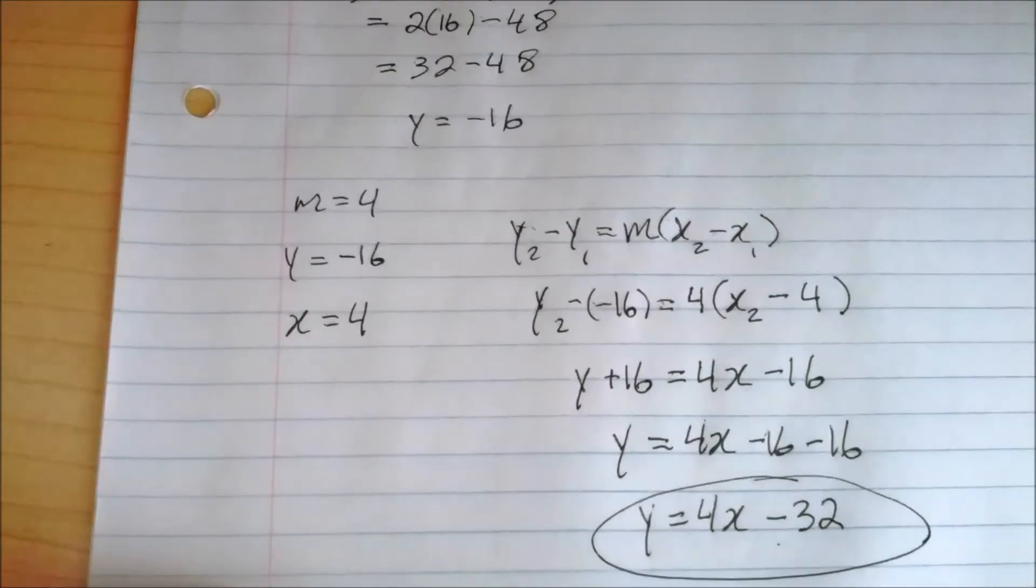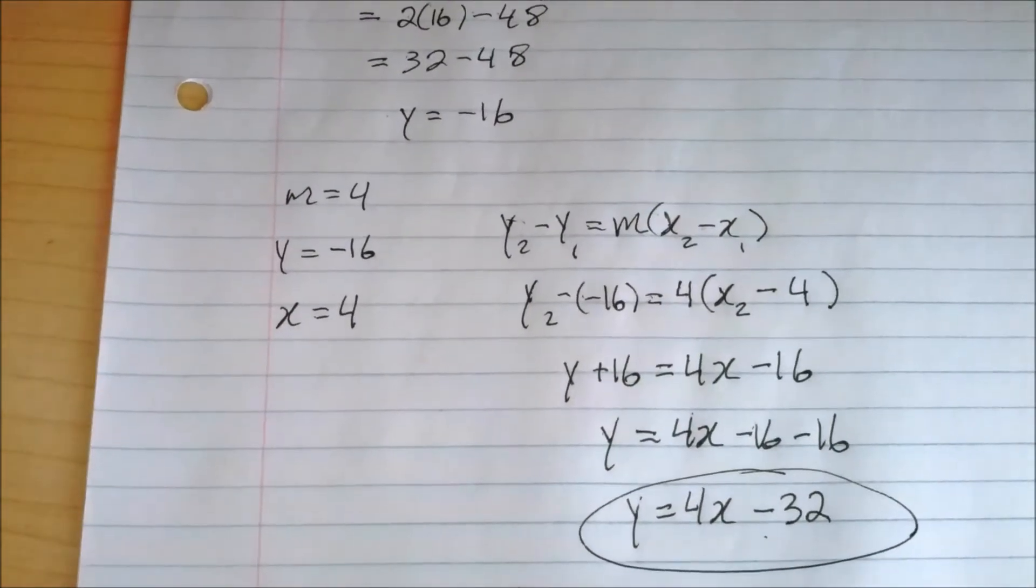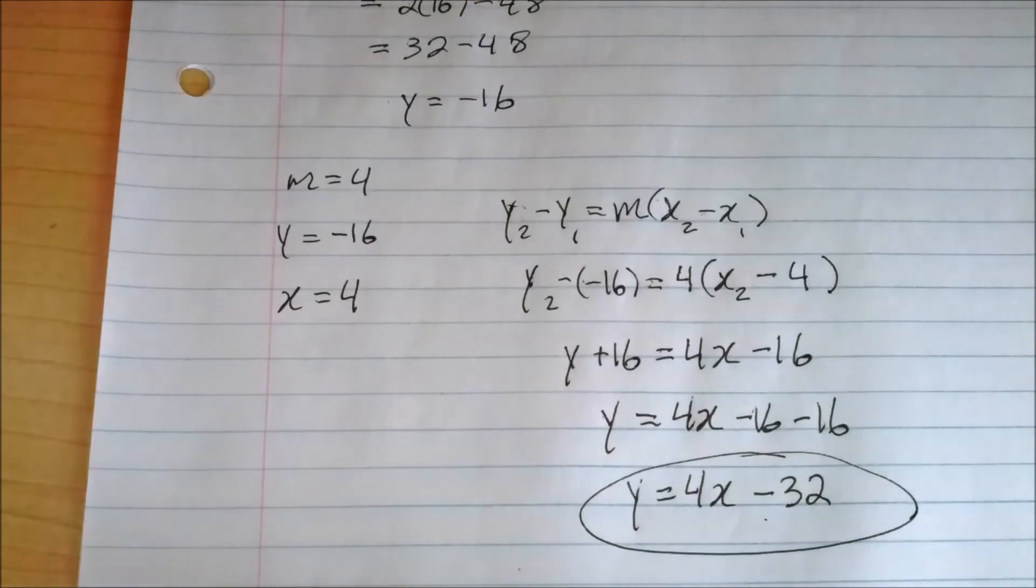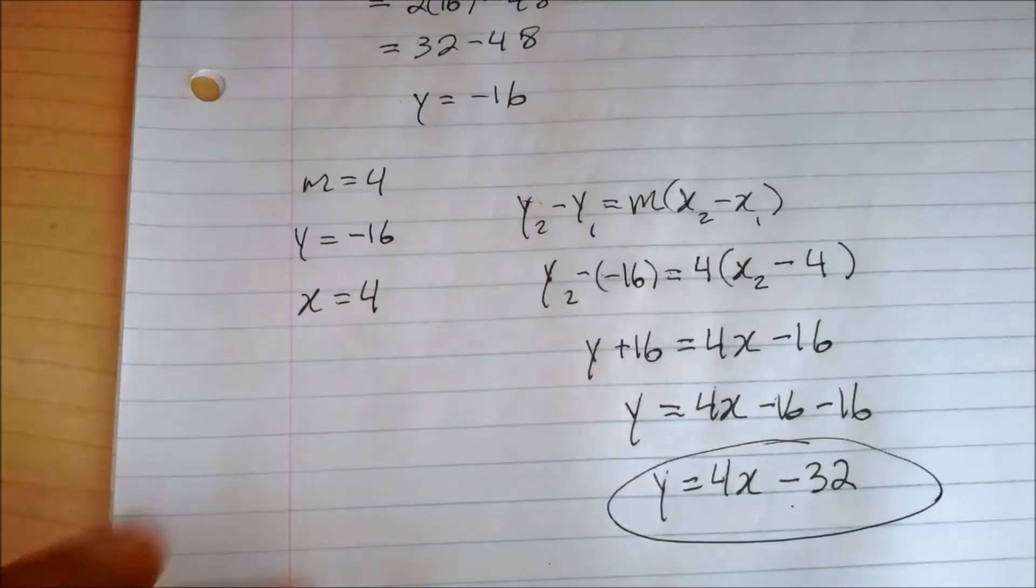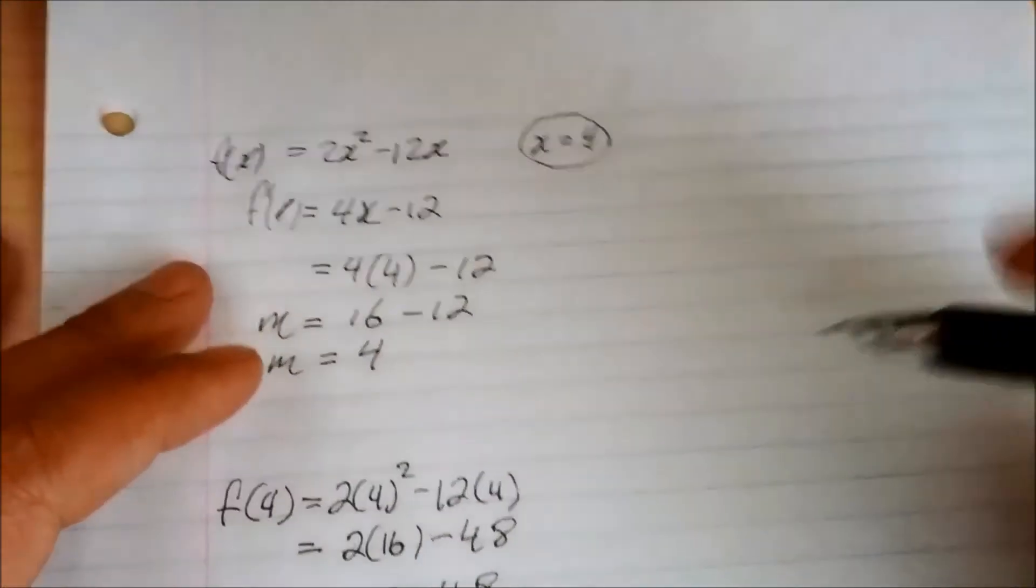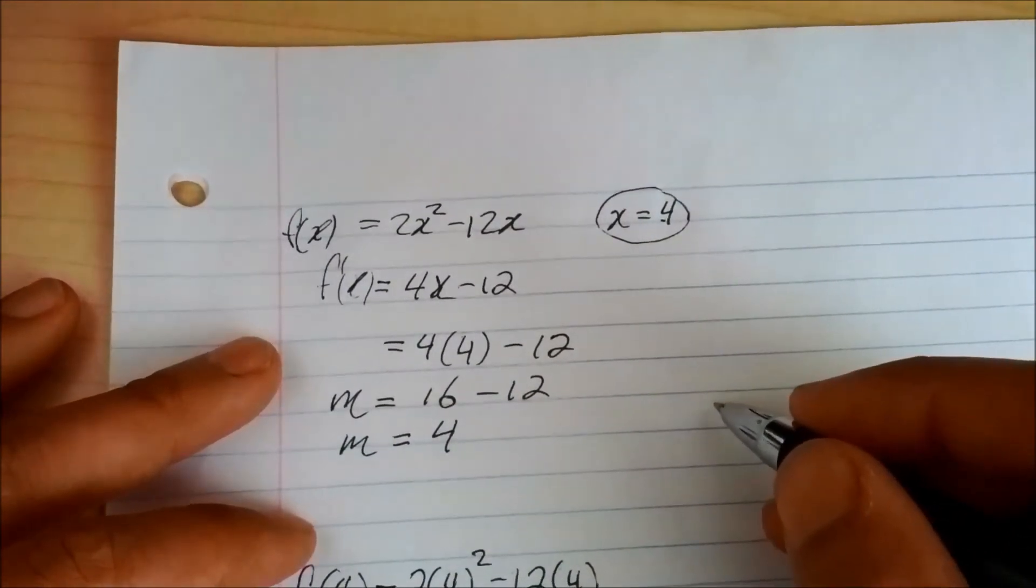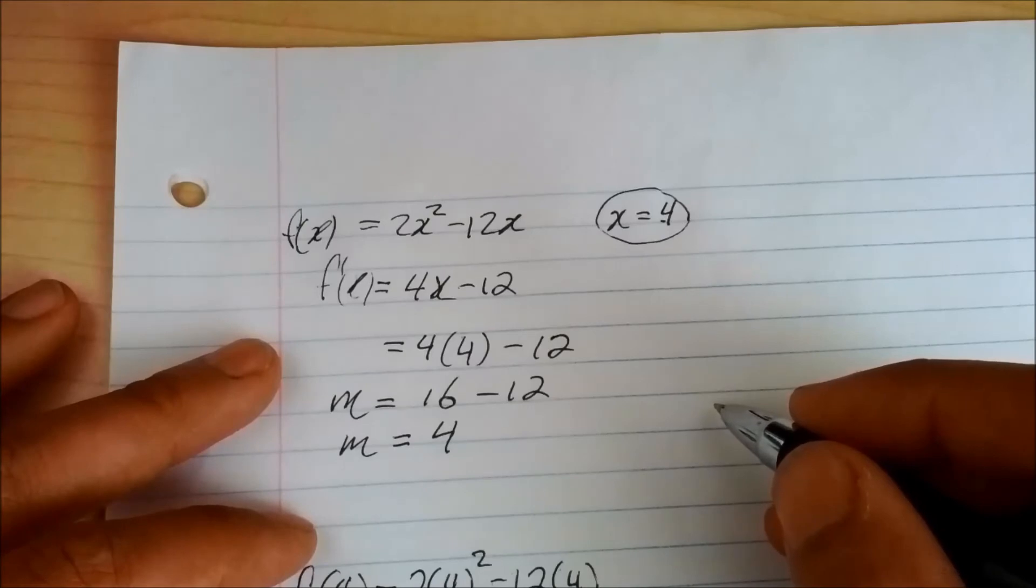Now to find the x and y intercepts at where the line crosses the x and y axis, that is really easy. Easiest part, I say. So you simply, to find the x axis, you make y equals 0 and solve for x.